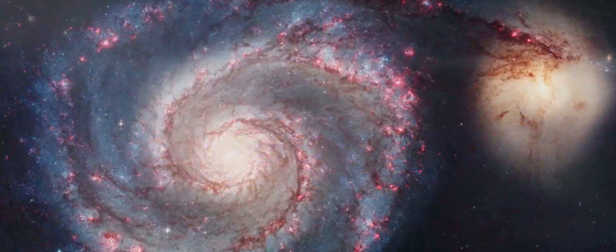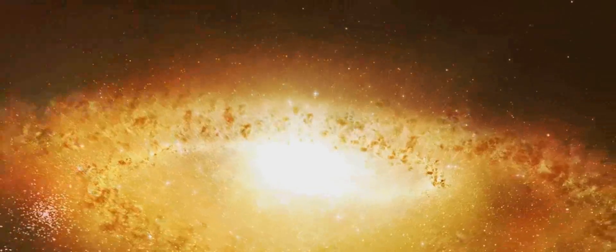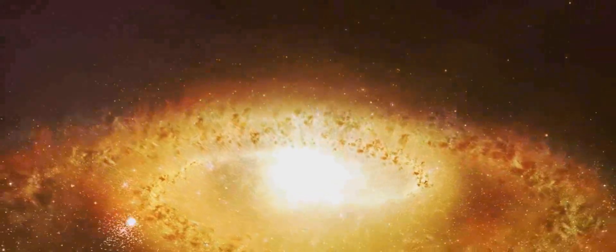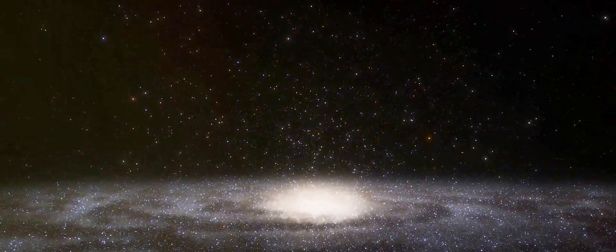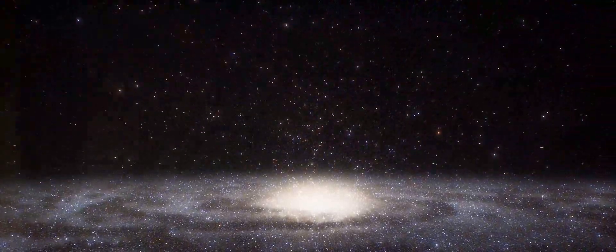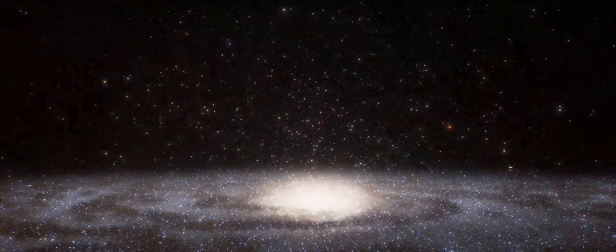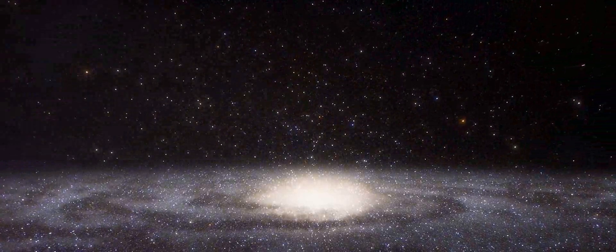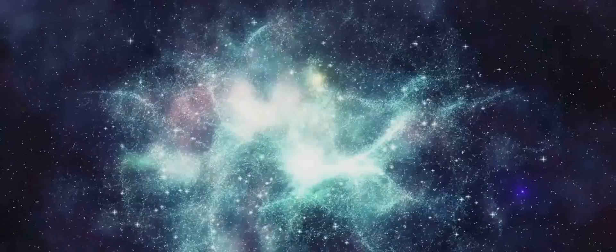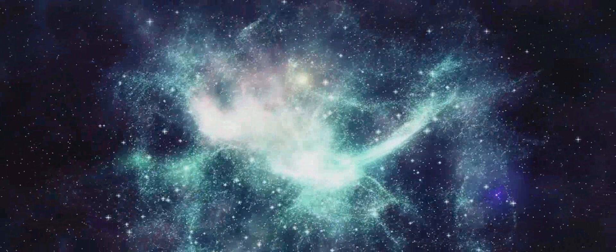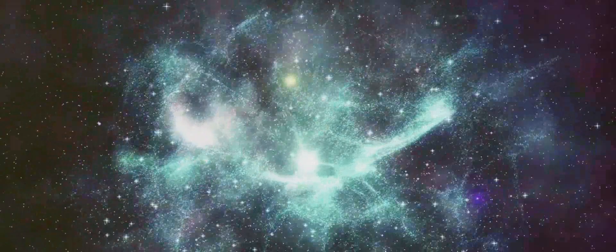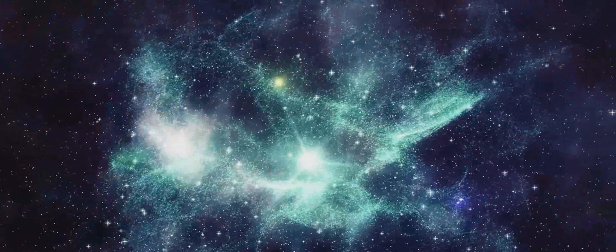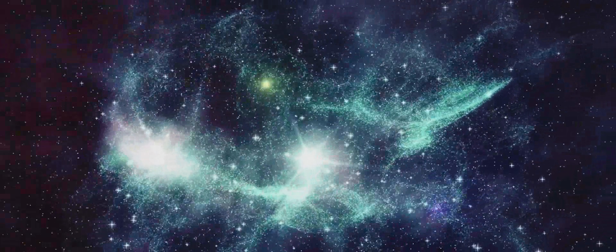Where do we fit into this cosmic story? Well, let's start with our own neighborhood, the Milky Way. It's a barred spiral galaxy made up of hundreds of billions of stars, and it's just one of an estimated 2 trillion galaxies in the observable universe. Our Sun, a rather ordinary star, is located in one of its spiral arms, about 27,000 light-years from the galactic center.